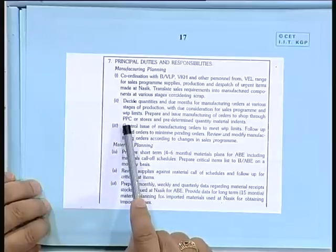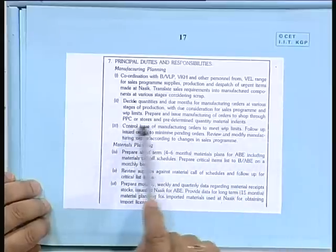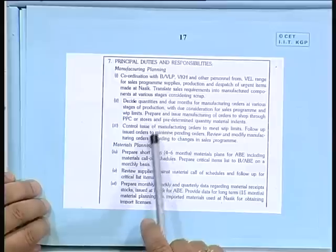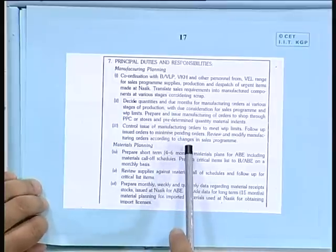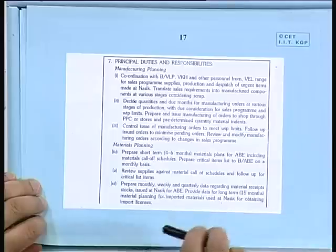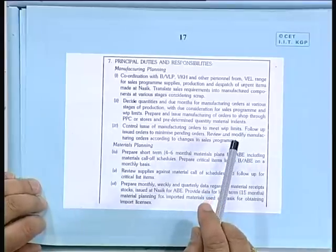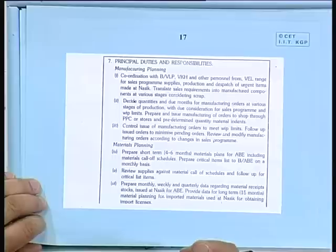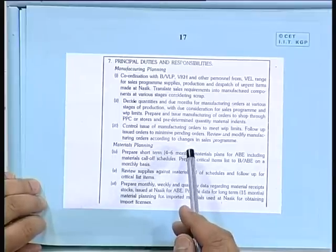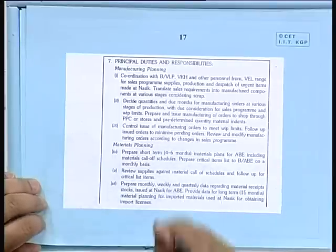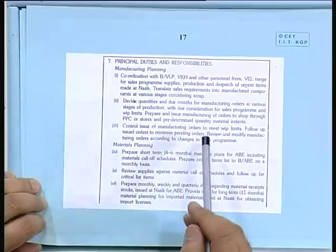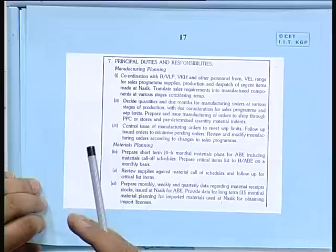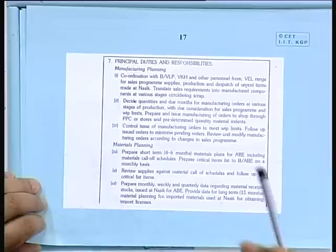Prepare and issue manufacturing orders to shops through PPC — production planning and control — or stores, with predetermined quantities of material indents. These are detailed processes. We said earlier: to what detail do you want to analyze the job? This is pretty detailed because he is not a very senior officer. If you had gone to general manager level or vice president level, it would not be so detailed — it would be very broad, encompassing many items.